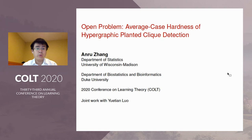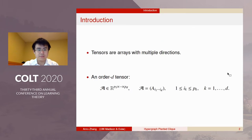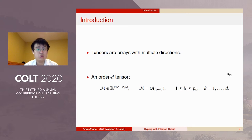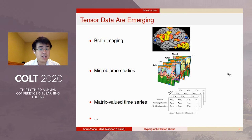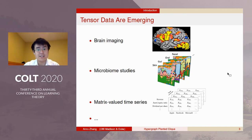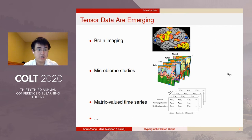Hello everyone, this is Anru. We'd like to propose an open problem today. So let's start with tensors. Tensors are arrays with multiple directions, and a d-order tensor usually has d directions. Tensors have become an active research area in data science, and there have been many datasets that are naturally in a tensor format, like brain imaging and genomics.